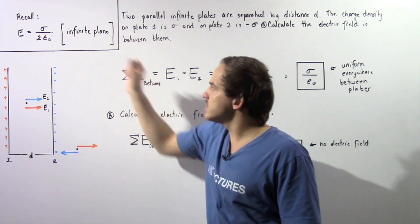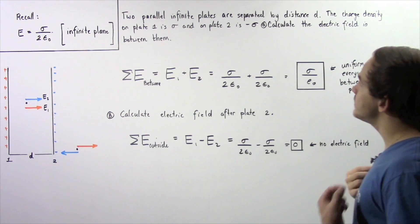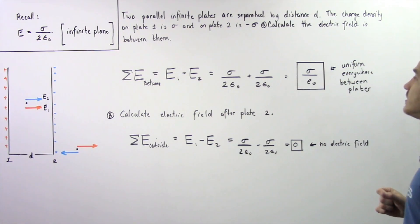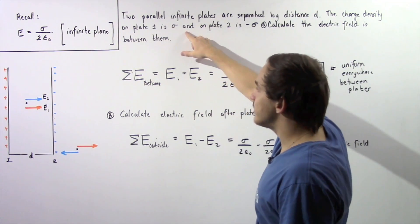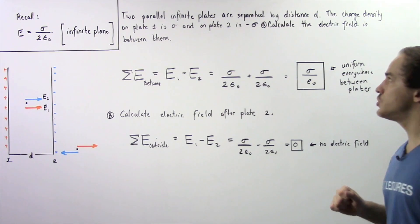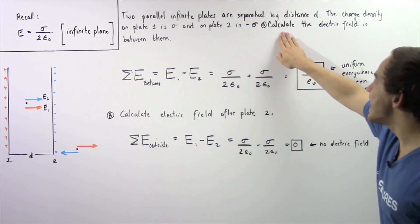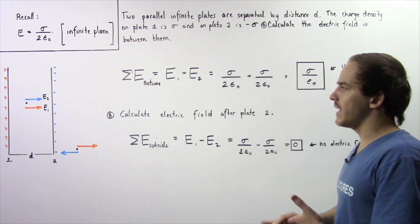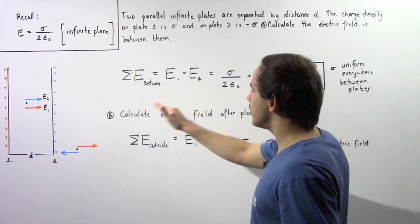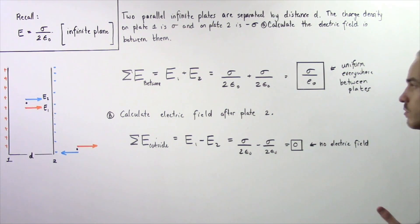Let's use this to solve the following example. Suppose two parallel infinite plates are separated by distance d. The charge density on plate number 1 is positive sigma, and the charge density on plate number 2 is negative sigma. In part A, calculate the electric field in between our two plates, and in part B, calculate the electric field outside of plate number 2.